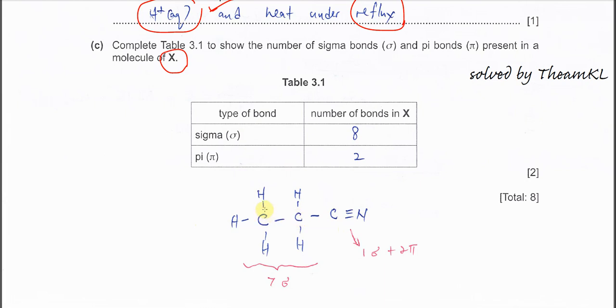So it's asked how many sigma and pi bonds in X. We know that all the CH bonds, CC bonds, they are sigma bonds: 1, 2, 3, 4, 5, 6, 7. And any multiple bonds, it will be just one sigma bond. The remaining will be pi bond. If it is triple bond, means one sigma bond, two pi bonds. If it is double bond, means one sigma bond, one pi bond. The sigma bond is always one only in the multiple bond bonding.